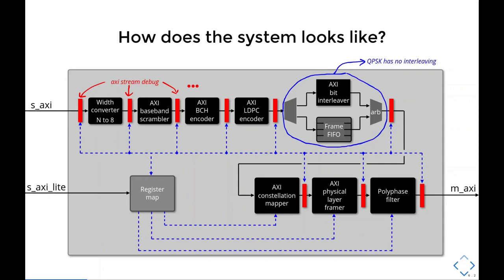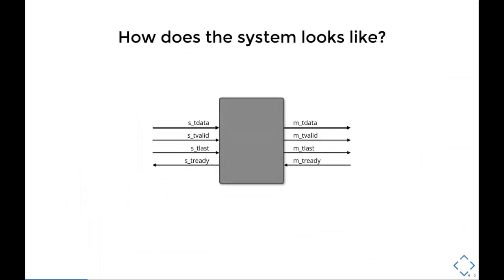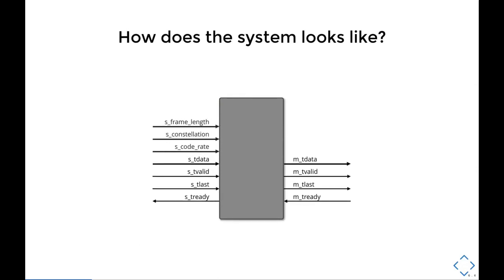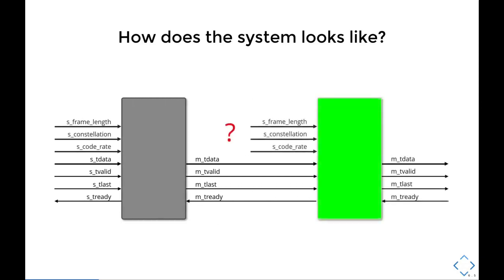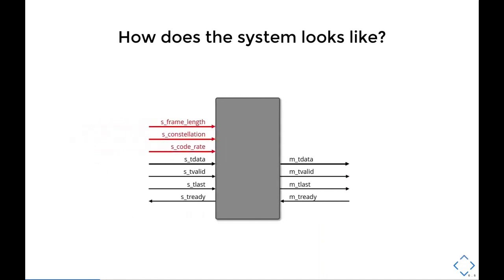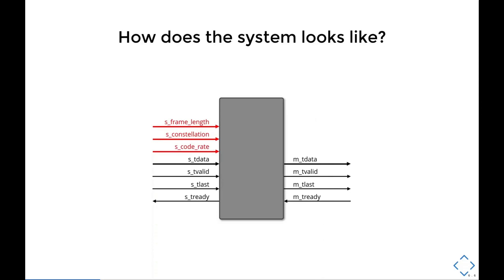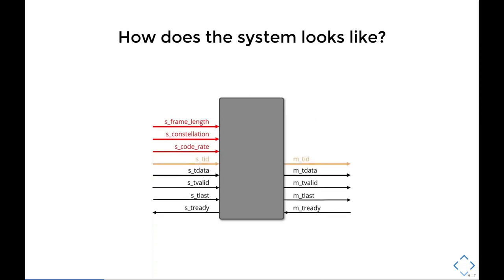Every block in the system looks similar to this, and most DVB-specific stuff will also have frame attributes. But we can't really change them like this because, for example, this green block here has nowhere to get data attributes from. So to support every frame having a different configuration, we need to transport this configuration alongside the frame itself. And we do this by using AxiStream TID interface.